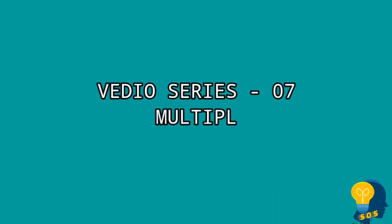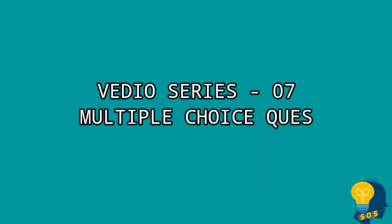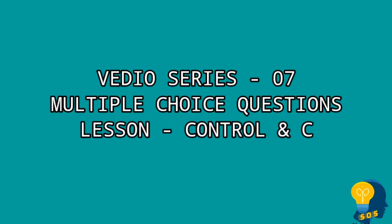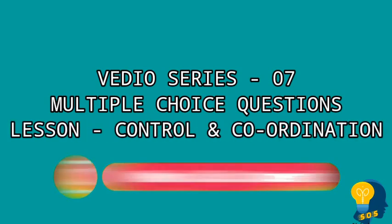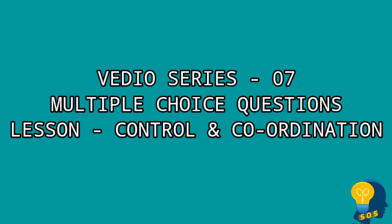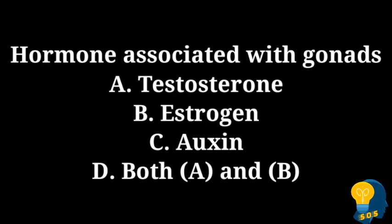Hi, my dear students, welcome back to my channel. In today's video, series 7, I'm going to start with multiple choice questions from the lesson Control and Coordination. As I read out the question and the answers, I will also explain why that answer will be marked for that particular question. So without delaying much, let us start. The first question is: hormone associated with gonads. The options are option A testosterone, option B estrogen,